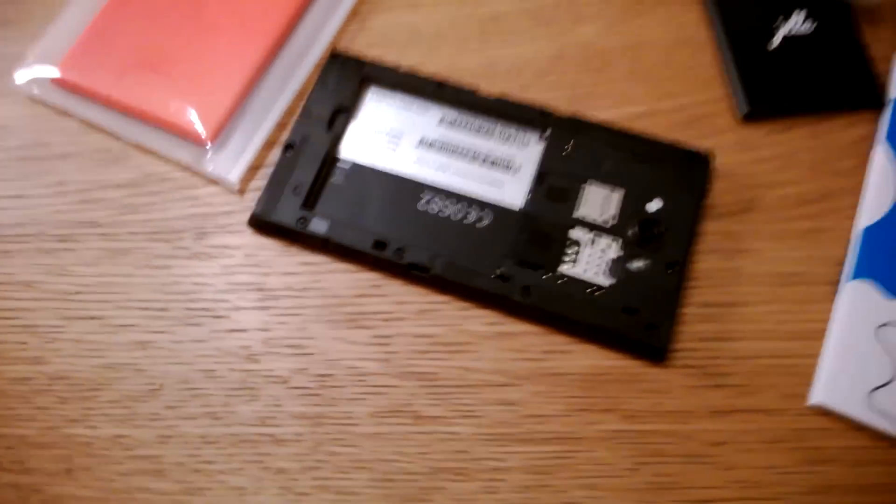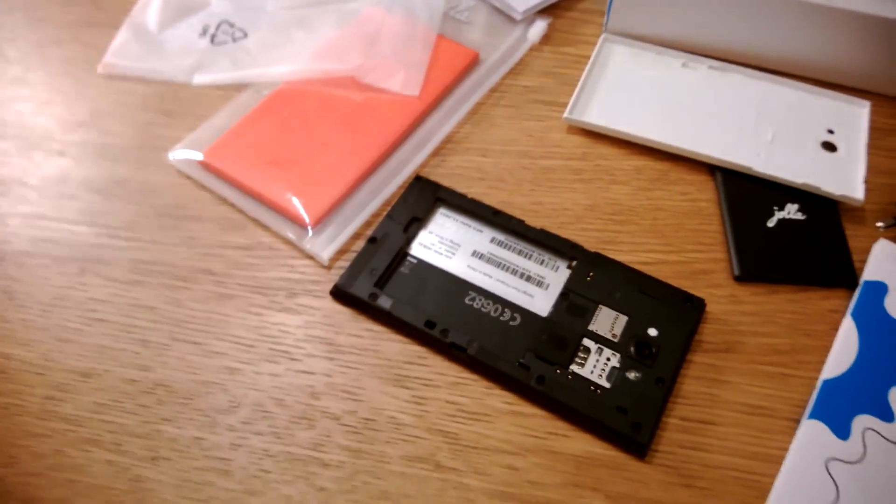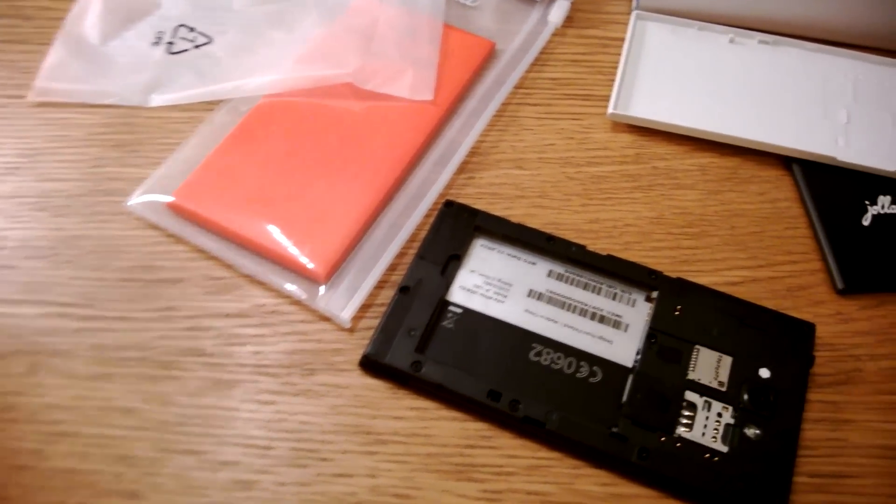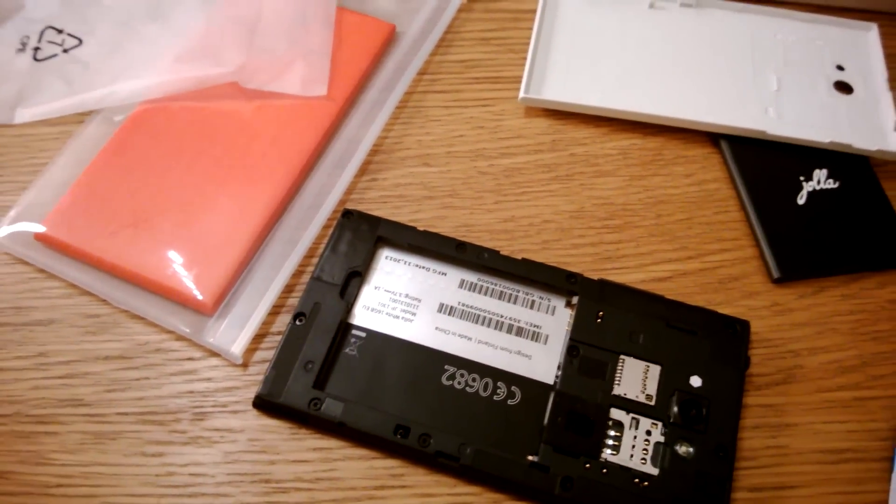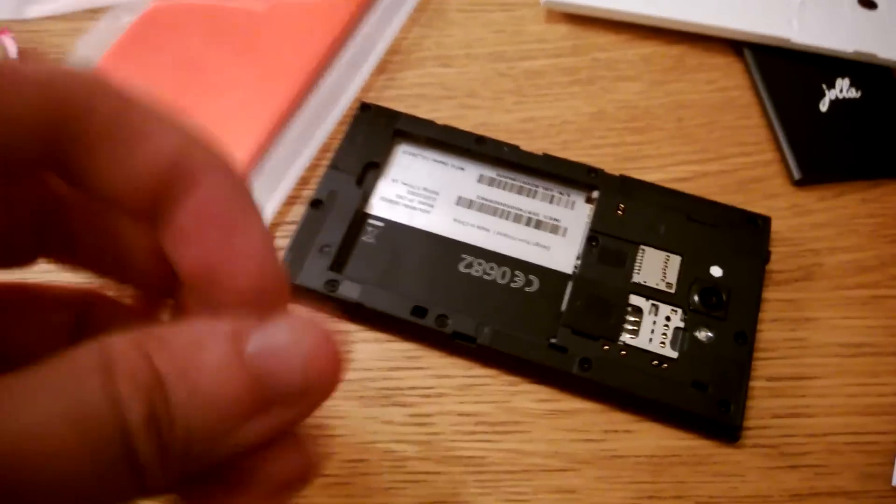And I see it's missing the SIM card. I have my new DNA SIM card in my wallet. But I used to have DNA. But now I got the micro SIM that the Jolla wants. And here's the micro SIM.